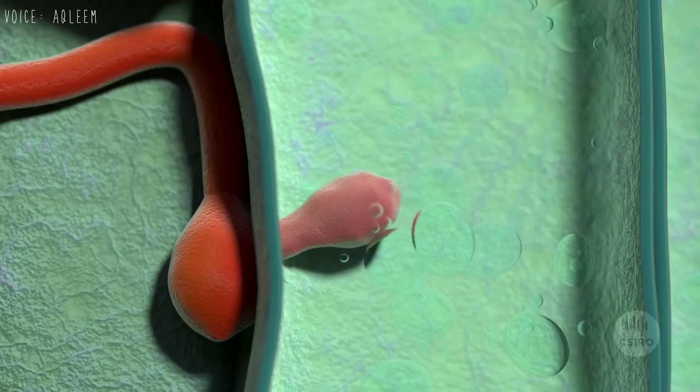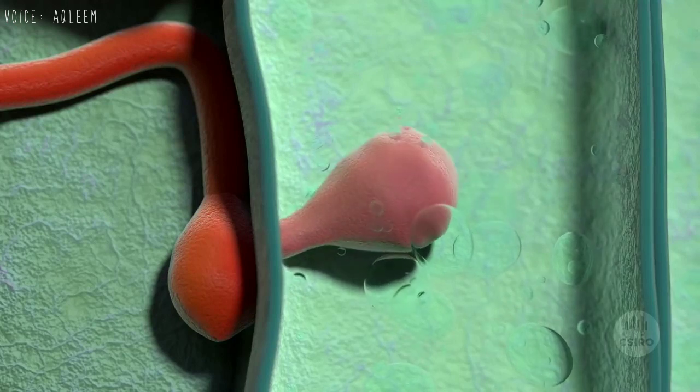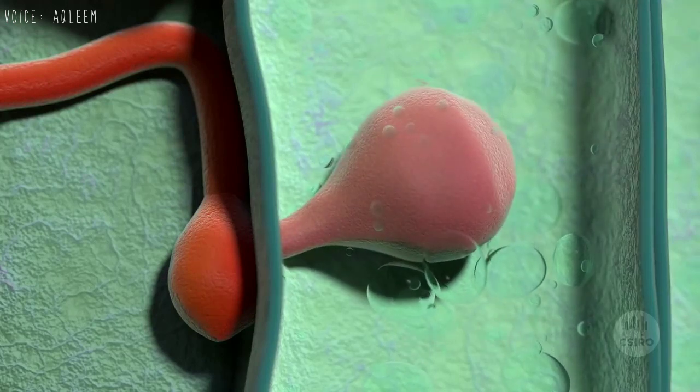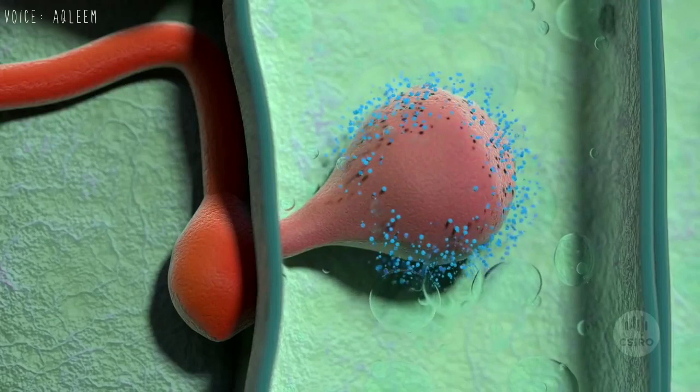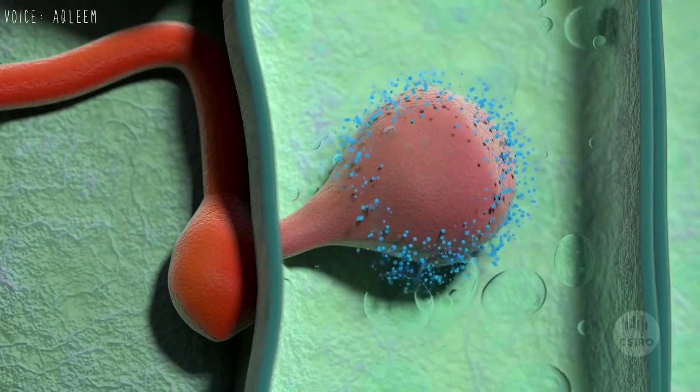Once inside the stem, another structure called haustoria is used to penetrate the plant cell. The fungus can now take nutrients from the plant.